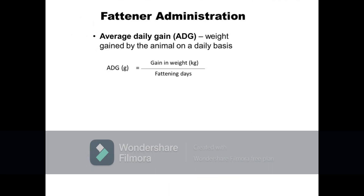Next parameter is average daily gain or ADG. ADG is a measure of growth rate of the animal and is described as the average weight gained by the pig on a daily basis during the fattening period. It is calculated as gain in weight in kilograms divided by the number of fattening days. For example, ADG of a fattener that gained 85 kilograms during a 140-day fattening period is calculated as 85 kilograms divided by 140 days, equals 0.61 kilograms per day.